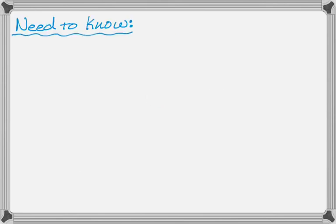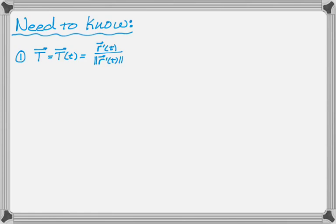The first thing you need to know: T is the unit tangent vector, so it's a function typically of little t, or time usually, and we can find that by doing r prime of t divided by the magnitude of r prime of t. Because it's a unit vector, the magnitude of T is equal to one, and that is a constant — that's going to be important.